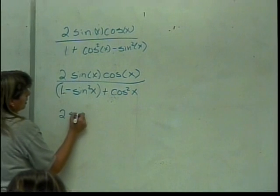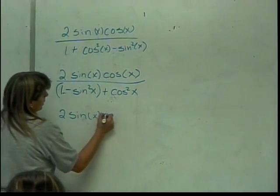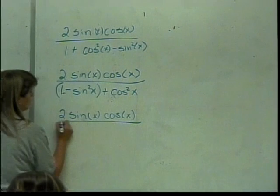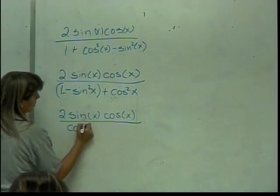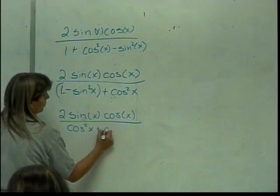So I have 2 sin(x) cos(x) divided by, excuse me, cos²(x) plus cos²(x).